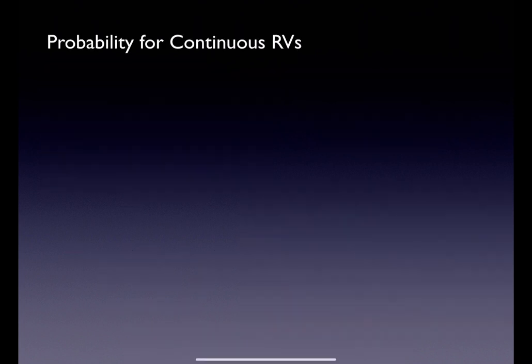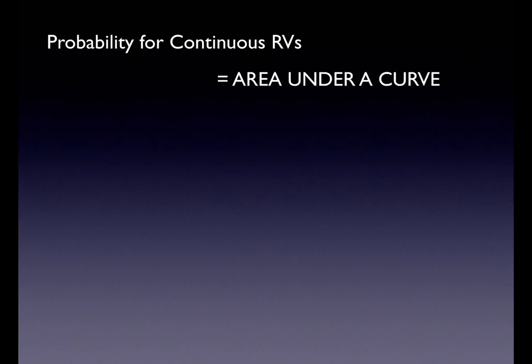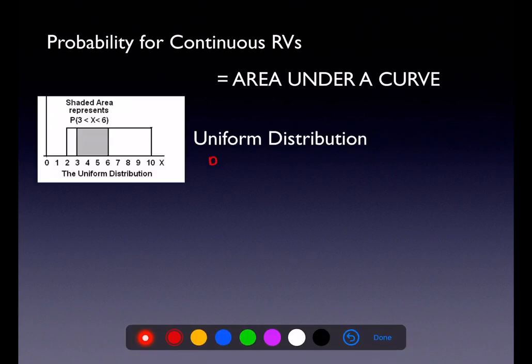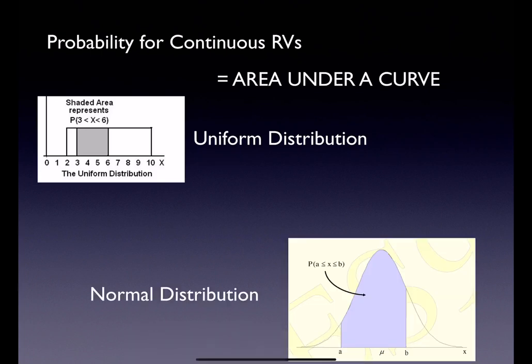In terms of probabilities, if I want to calculate a probability on a continuous curve, I'm going to go with area under the curve. If we have the uniform distribution, we're going to use base times height. If we have a normal curve, we're going to use normalCDF — we don't have the calculus to calculate it the longer way, and we don't need to.